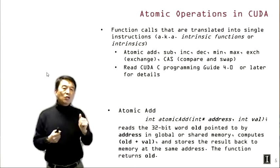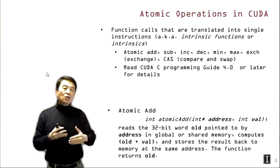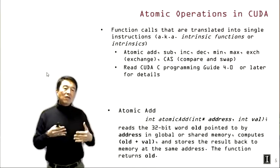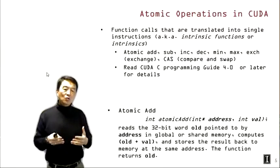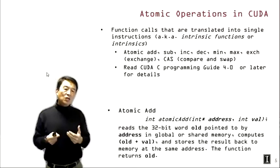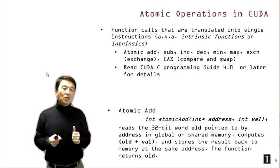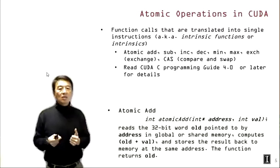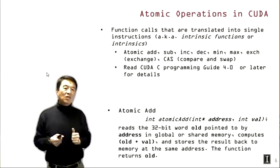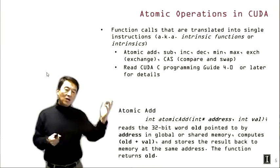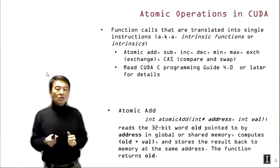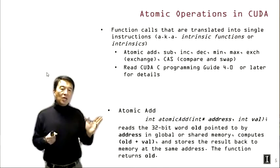Each of these atomic operations enables certain functionalities that are sometimes hard to do with other types. If you're interested, you can learn more on Wikipedia or related media. CUDA provides all these types of atomic operations, and you can read the CUDA C Programming Guide 4.0 or later for more details. For this lecture, we'll focus on the atomic add operation and show how to use it to implement a histogram.